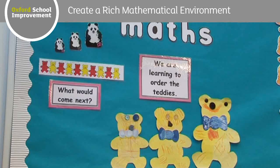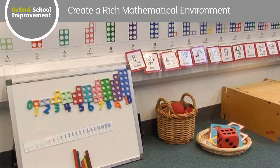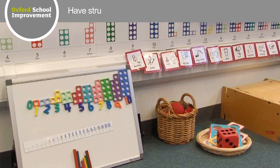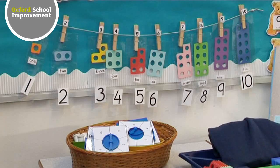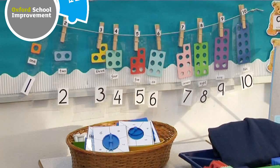From the beginning of the foundation stage, children need to see structured apparatus such as Cuisenaire rods and Numicon shapes with structured imagery such as number lines everywhere. These should be available for their play, integrated within corners and displays, inviting their attention.